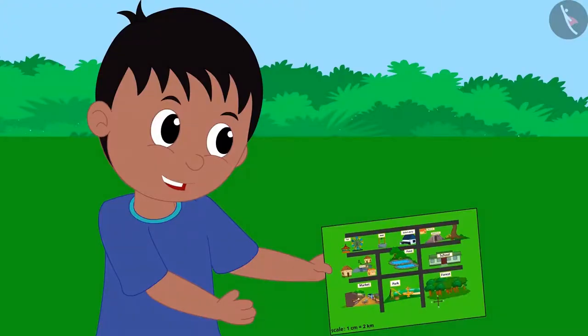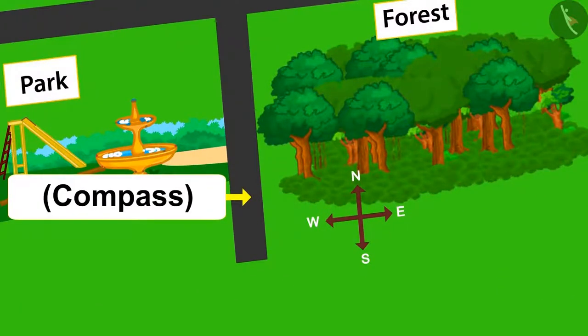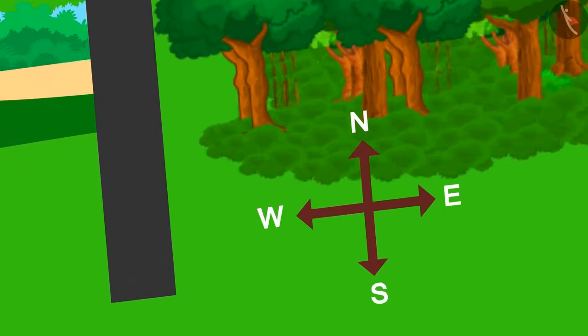But take a look. A compass like this is given on every map. Saying this, Raju showed Bablu the compass drawn on his map.